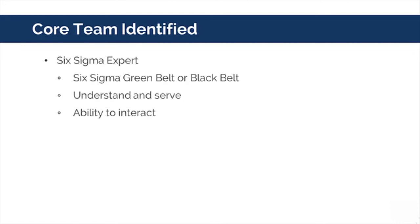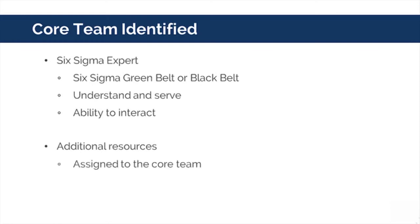The other members of the core team are additional product or process experts. These are people who may be assigned to the core team, and some examples include people with intimate knowledge of the process and subject matter experts.